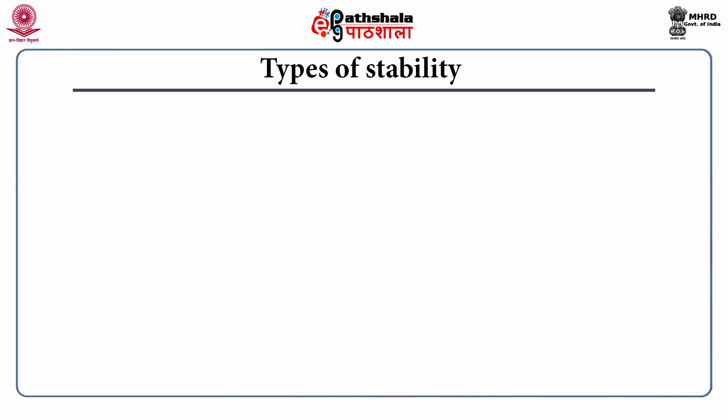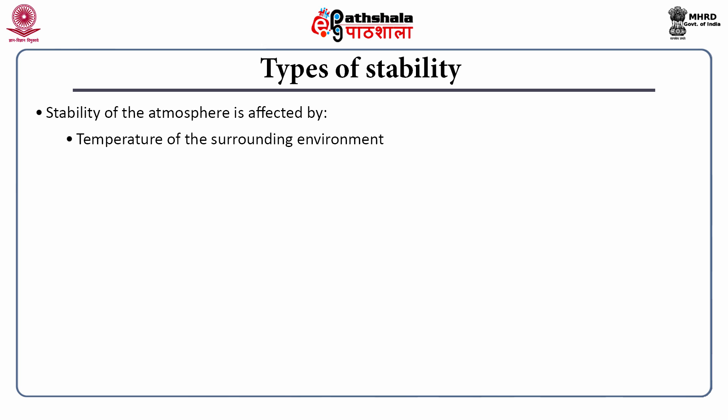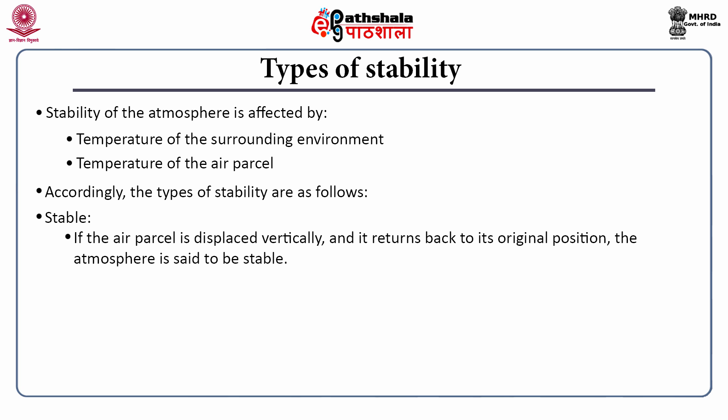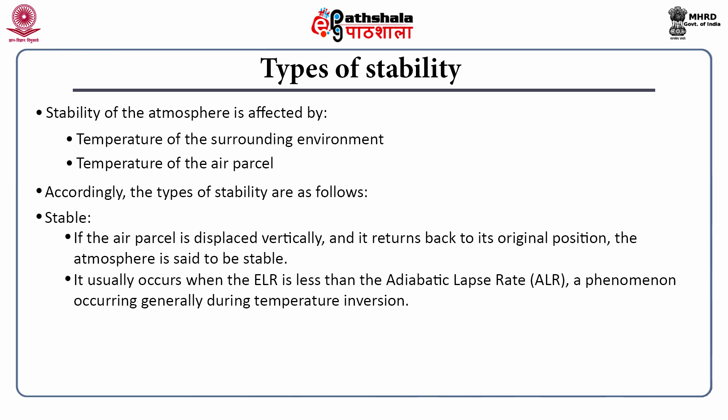Now, let us see how many kinds of stabilities exist in our atmosphere. The stability of the atmosphere is affected by factors which include the temperature of the surrounding environment and the temperature of the parcel of air. The first type is stable atmosphere. If the air parcel is displaced vertically and returns back to its original position, the atmosphere is said to be stable. It usually occurs when the ELR is less than the adiabatic lapse rate, a phenomenon occurring generally during temperature inversion.